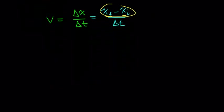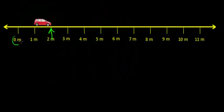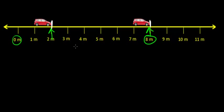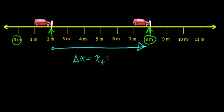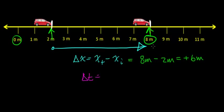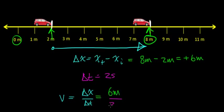Let's look at an example. An object starts at 2 meters from the origin and travels to a point 8 meters from the origin — a distance of 6 meters from its starting point. Its displacement, delta x, is the final position minus the starting position: 8 meters minus 2 meters equals positive 6 meters. If it took 2 seconds to travel this distance, the velocity is 6 meters divided by 2 seconds, which equals 3 meters per second.